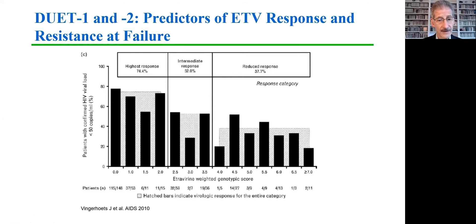What's important here is that the 181C by itself already gave a weighting factor of 2.5, meaning that just that one single mutation — a common nevirapine resistance mutation — would significantly impair the clinical response to etravirine.